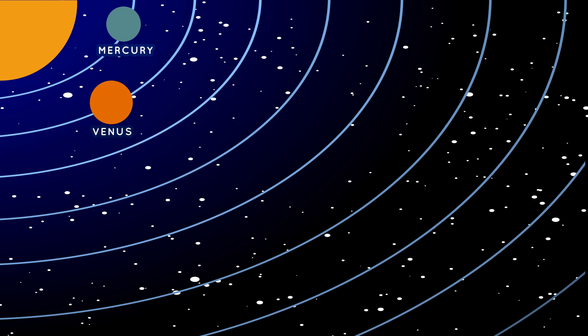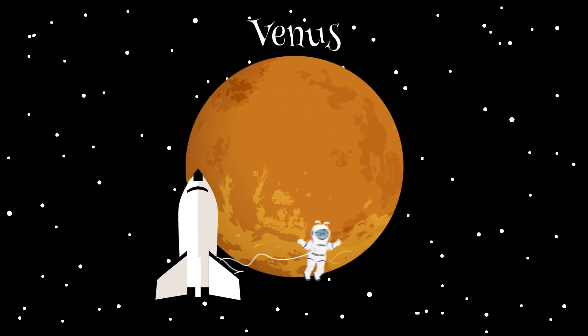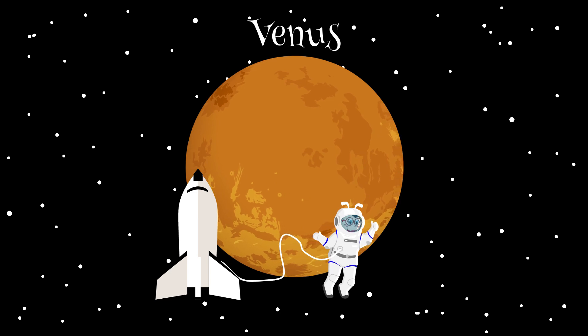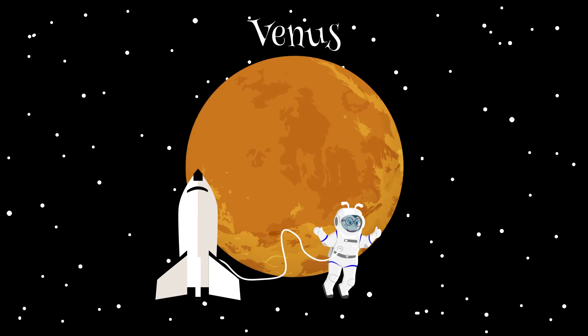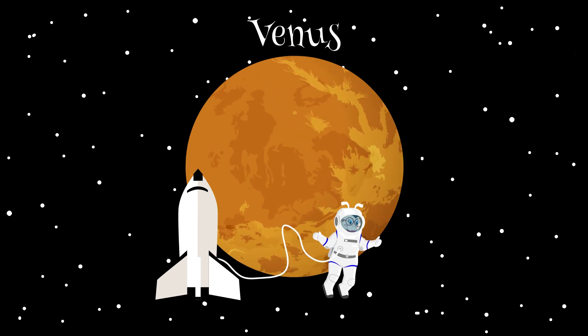Venus is the second planet in our solar system. From a distance, Venus looks similar to Earth, because the two planets have about the same size and mass. But in reality, Venus has a thick, toxic atmosphere that traps heat. Venus' surface temperature is hot enough to melt lead.